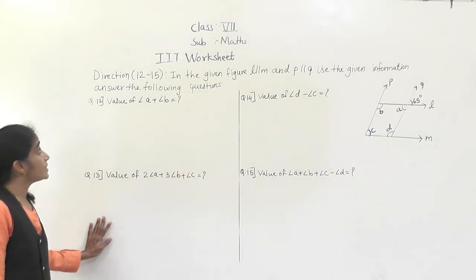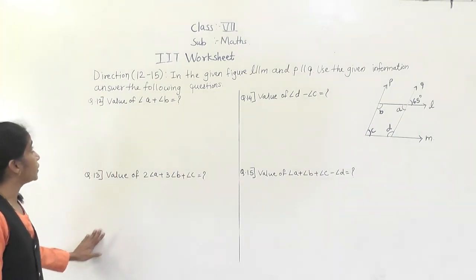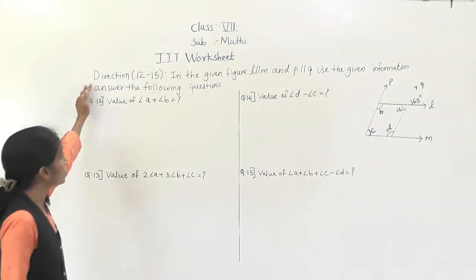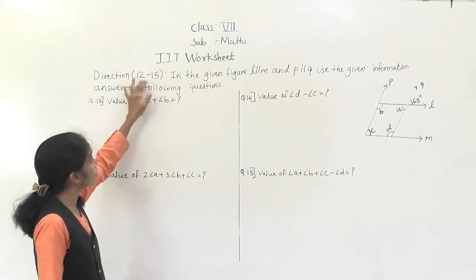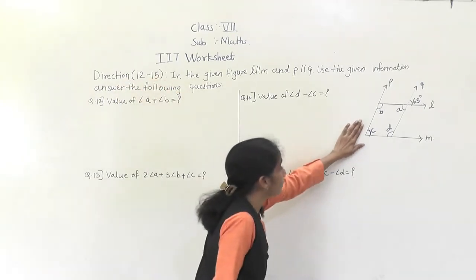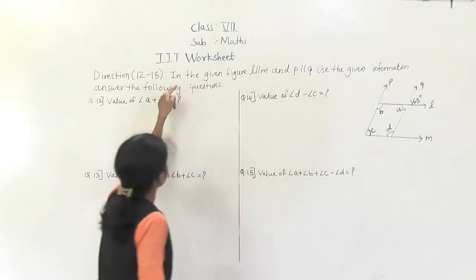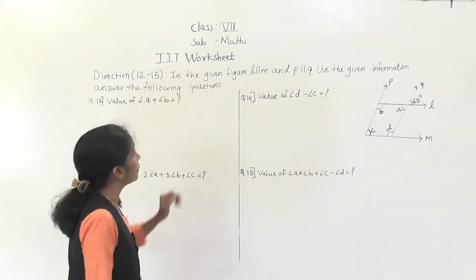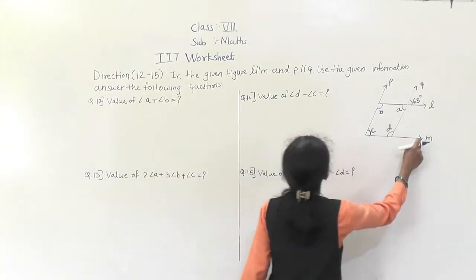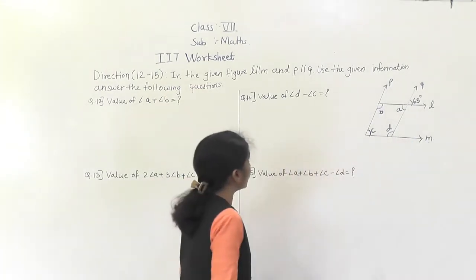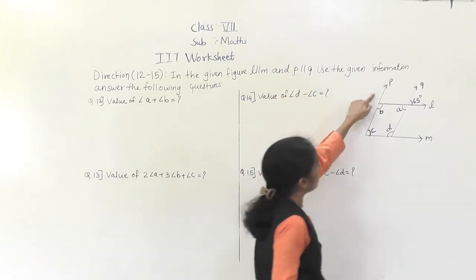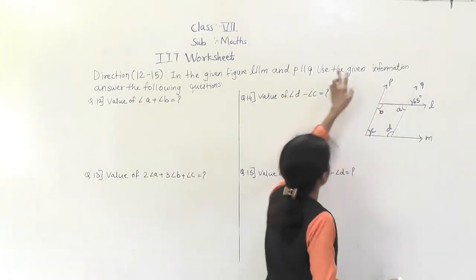Hello everyone, let's start the IIT worksheet. We have to solve questions number 12 to 15 using this figure. In the given figure, L is parallel to M — L and M are parallel lines — and P is parallel to Q.